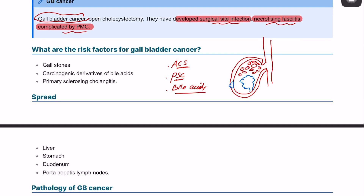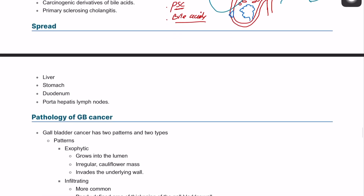In terms of the anatomical relations of the gallbladder: on top you have the liver, very close you have the stomach and the duodenum, some lymph nodes in this area, and the porta hepatis as well. All of these areas represent sites of direct metastasis of gallbladder cancer.